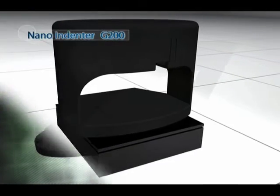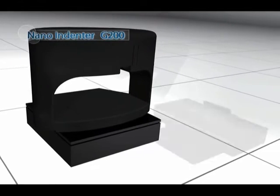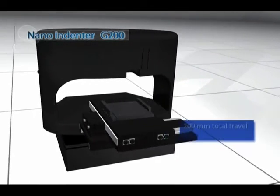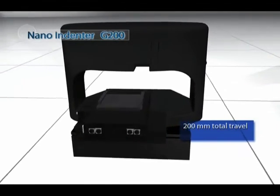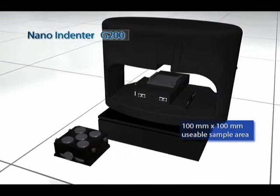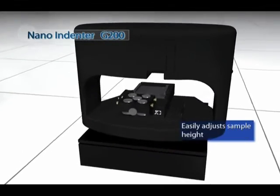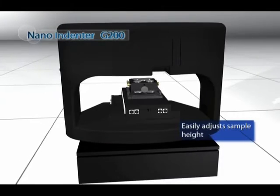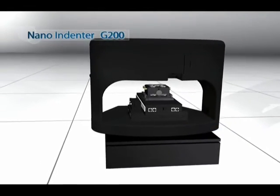These components are located in the system's gantry to allow for maximum sample coverage and flexibility in testing. Here, you're seeing how the XY motion system, sample tray, force transducer, and microscope assembly fit into the nano indenter gantry.